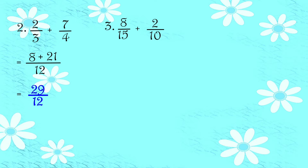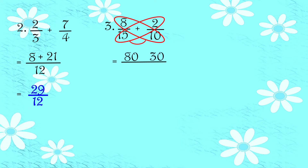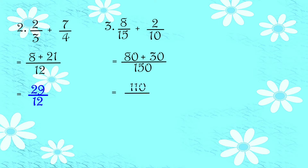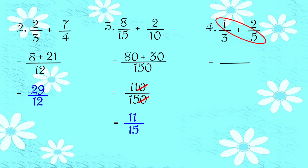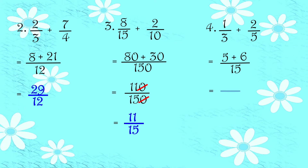Number 3: 8 over 15 plus 2 over 10. So using butterfly method. So 8 times 10 is equals to 80. 15 times 2 is equals to 30. And 15 times 10 is equals to 150. And then add: 80 plus 30 is equals to 110 over 150. So pwede natin i-cancel yung 0 para masimplify natin. So ang sagot ay 11 over 15. Number 4: 1 third plus 2 fifth. So using butterfly method. So 1 times 5, we have 5. 3 times 2, we have 6. And 3 times 5 equals 15. And then add: 5 plus 6 equals 11. And then copy the denominator.